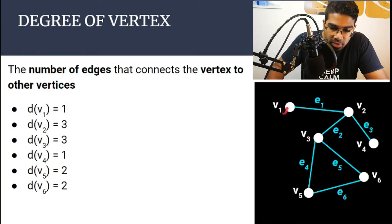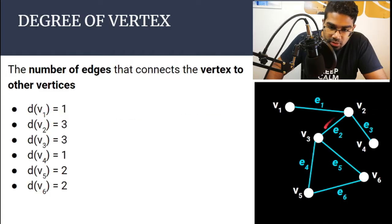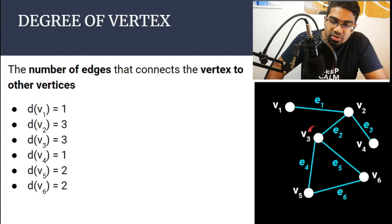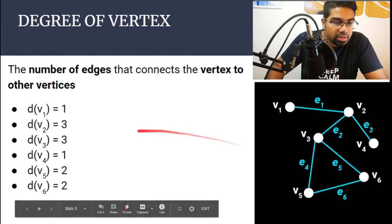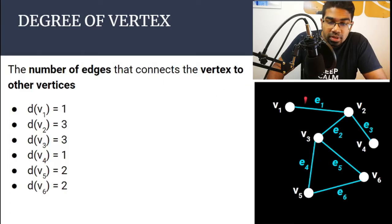From V1, there is only one edge going out — one edge that connects to V2. So the degree of V1 is 1. Let's look at V2: there are three edges going out of V2 that connect to other vertices, so the degree of V2 is 3. V3 also has three edges connecting it to other vertices, so the degree of V3 is also 3 and so on. You look at the number of edges coming out of the vertex.